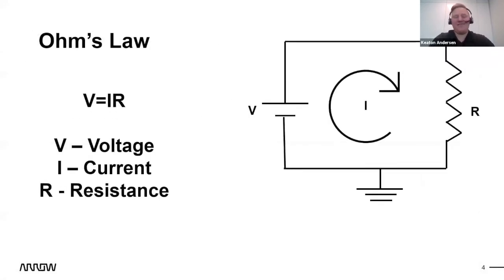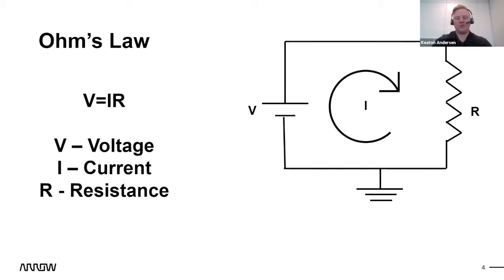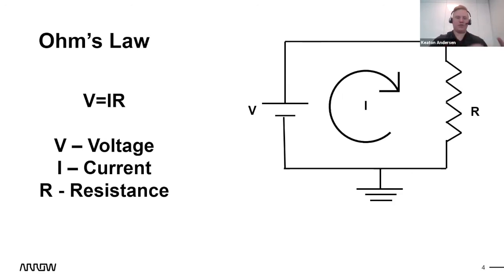Let's talk about Power 101. Ohm's law is the very basics: you have a voltage source and some resistance, and the relationship between voltage and resistance is proportional based on current. If I have five volts and five ohms, then I have one amp. You can use these relationships to tweak power — setting a particular voltage or resistance helps define what you're doing for the rest of your circuit.